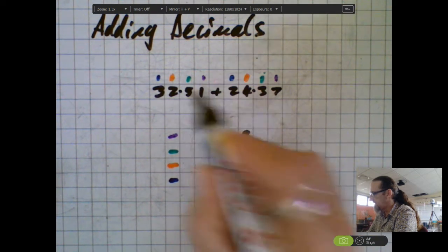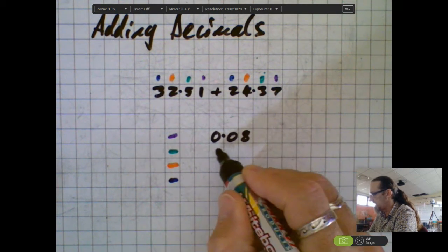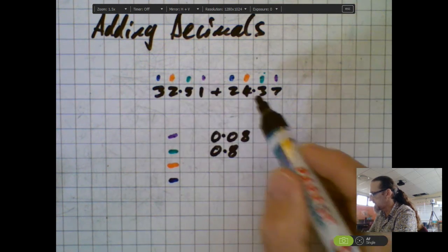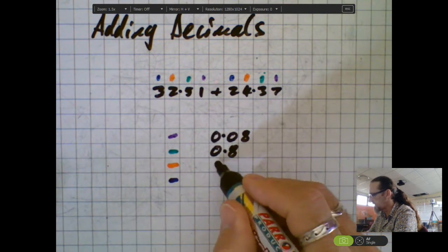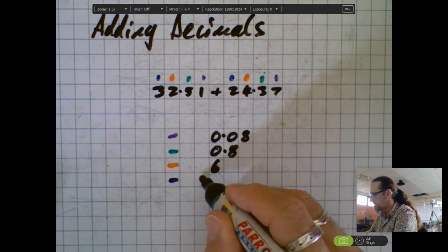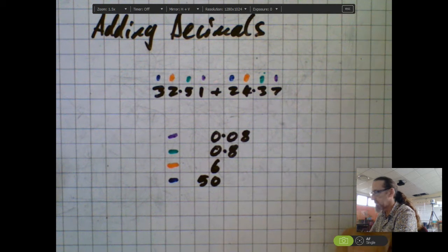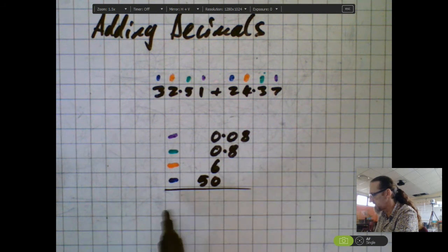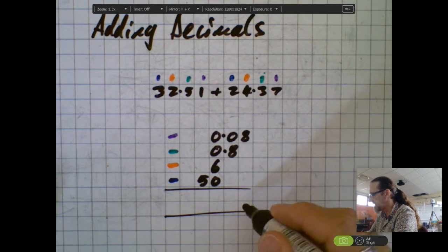I got five tenths and three tenths which is eight tenths. I got two ones and four ones which is six. And I got three tens and two tens which makes fifty. So now we can see it's dead easy and I'm gonna use column addition just to really quickly add those up.